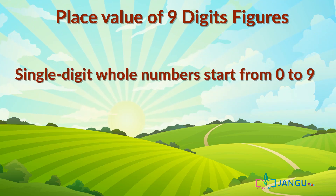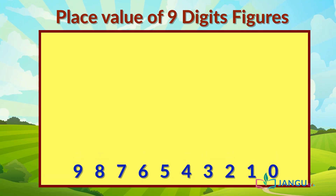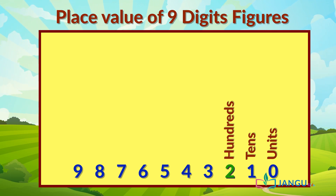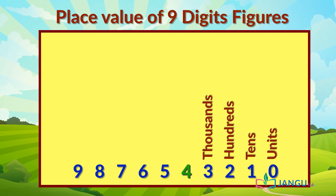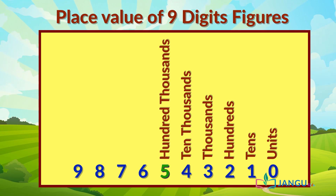Single digit whole numbers start from 0 to 9, and in the place value system they are called units. Add another column after 9 items to show the value of 2-digit numbers. For 3-digit numbers, we add another column called hundreds. 4-digit numbers attract another column called thousands. 5-digit numbers attract another column called tens of thousands. For 6-digit numbers, we add another column called hundreds of thousands.